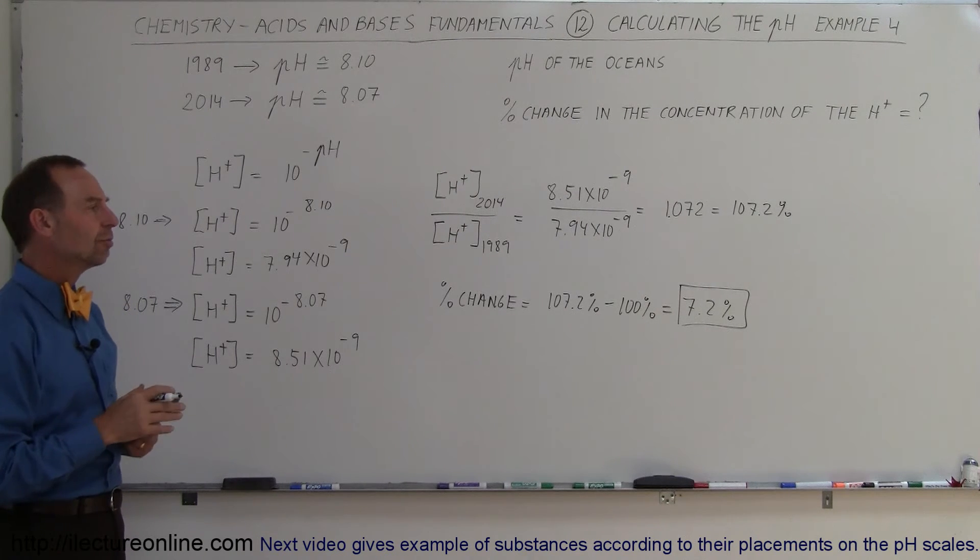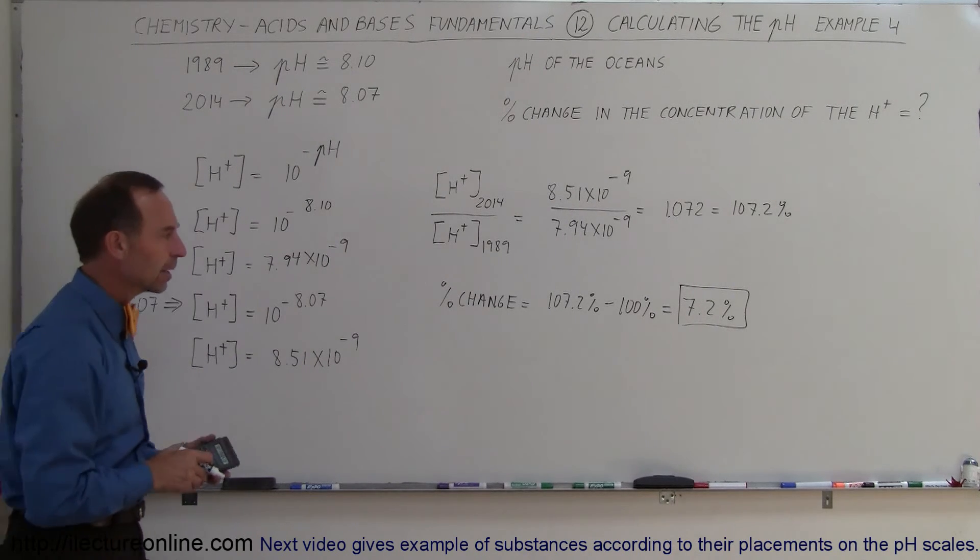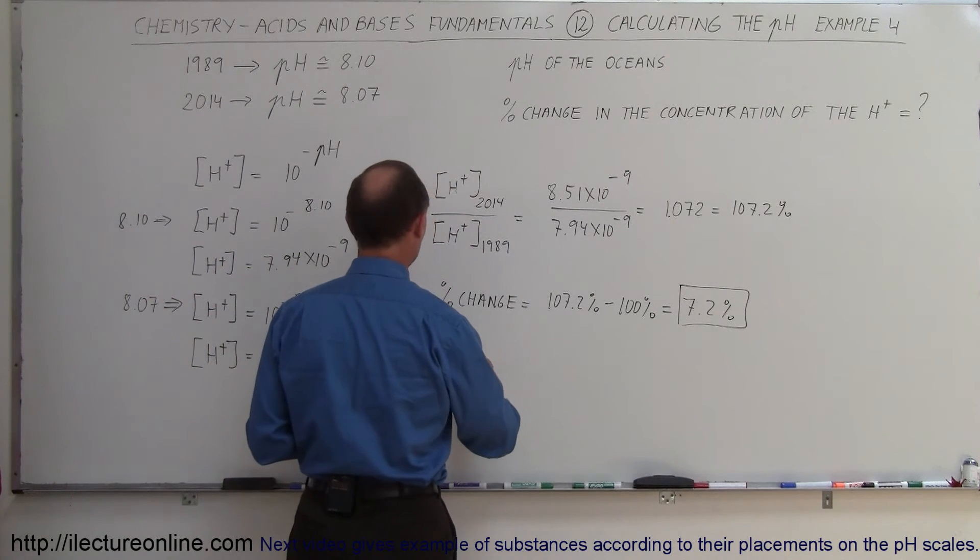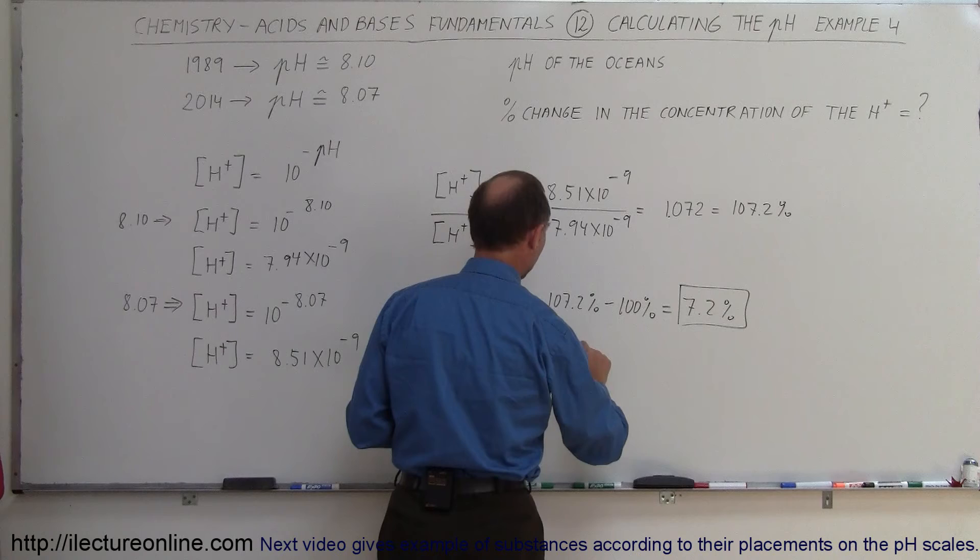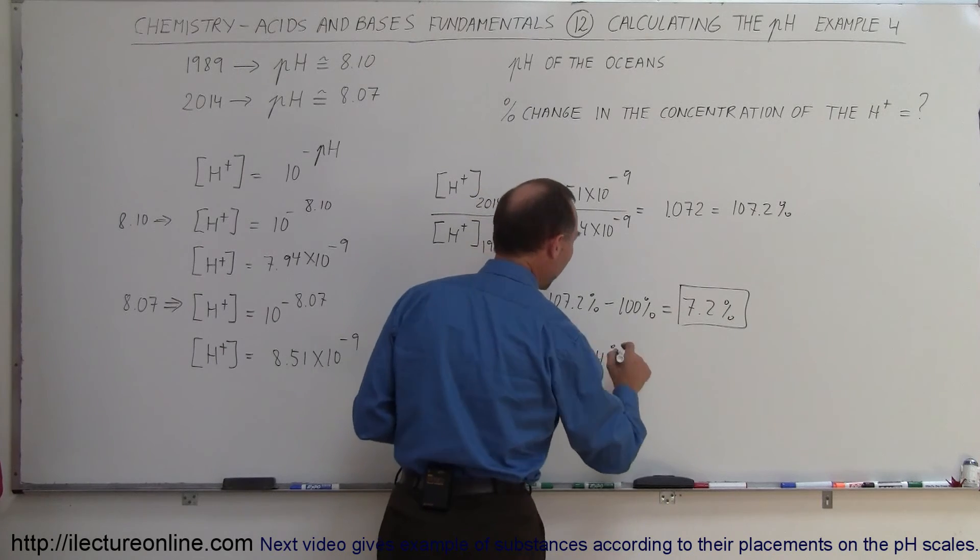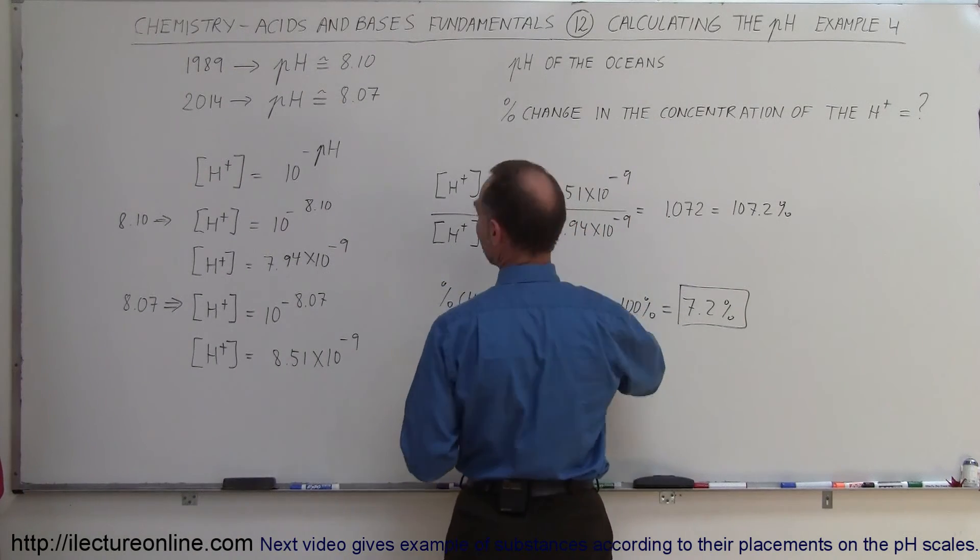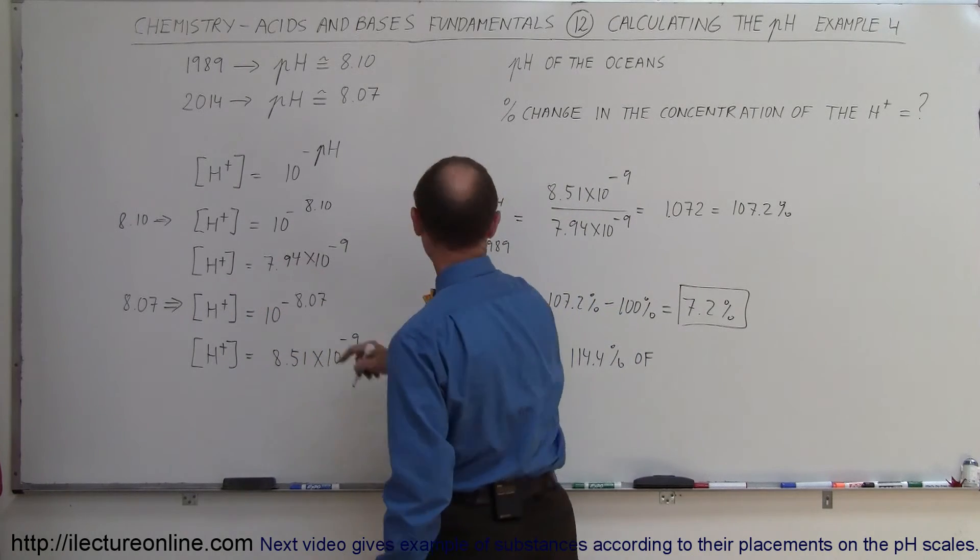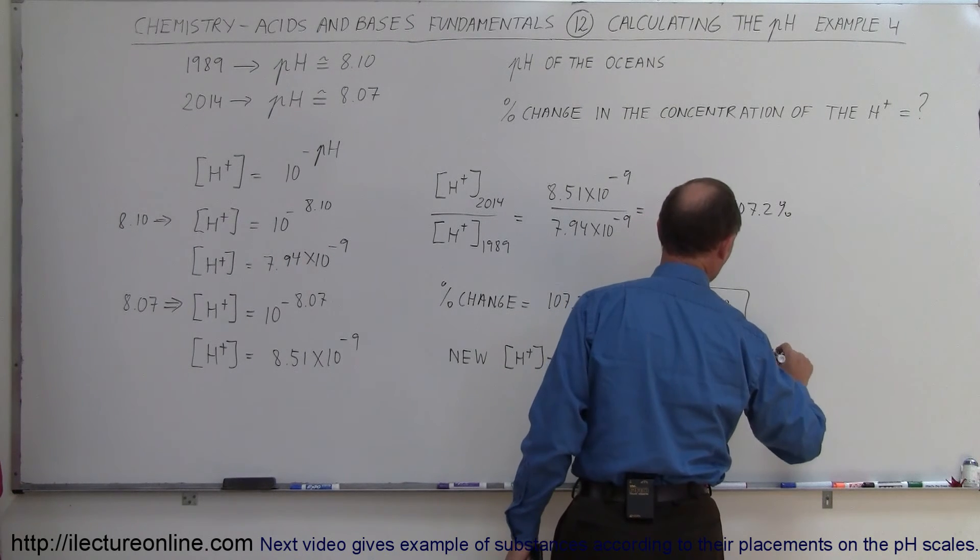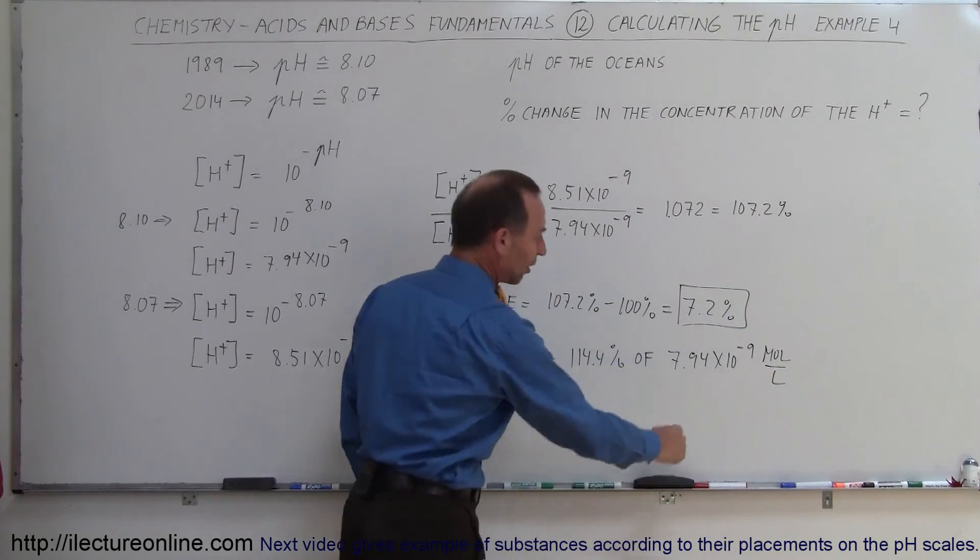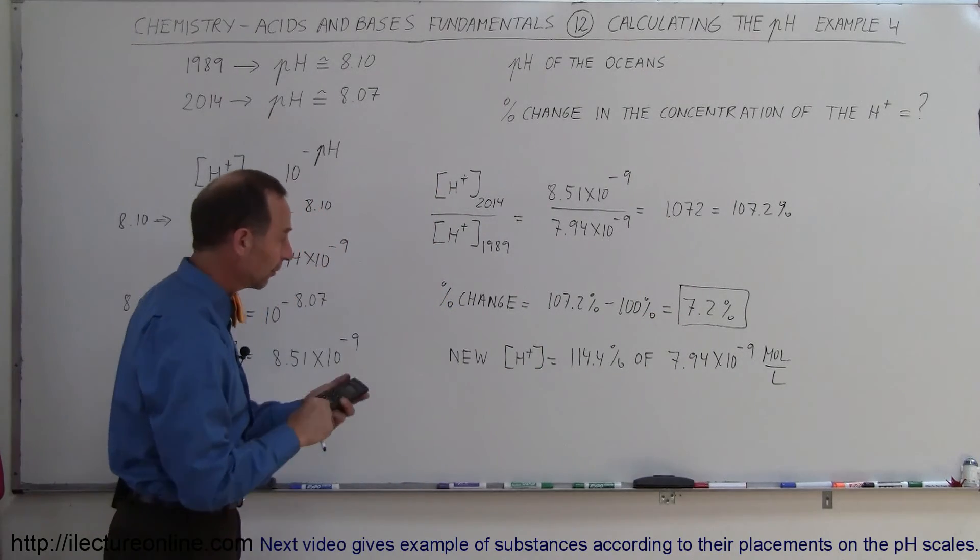So what would the pH concentration be if there was another 7.2% change over the current concentration? So we have another 7.2% change, that would be the new concentration of the hydrogen. So that would be 114.4% of the amount that we had back in 1989, right? So of the concentration we had in 1989, which was 7.94 times 10 to the minus 9, that of course would be moles per liter. So that was the concentration in 1989. Let's say that we add another 7.2% over what we had before. So what would we get now?